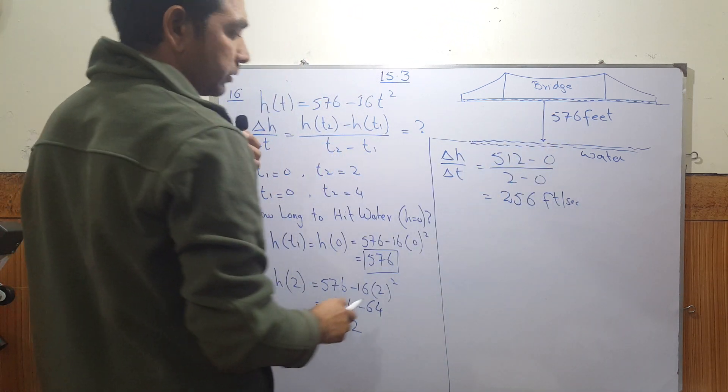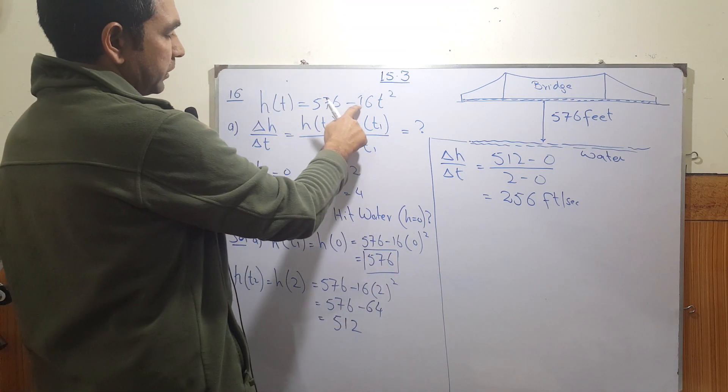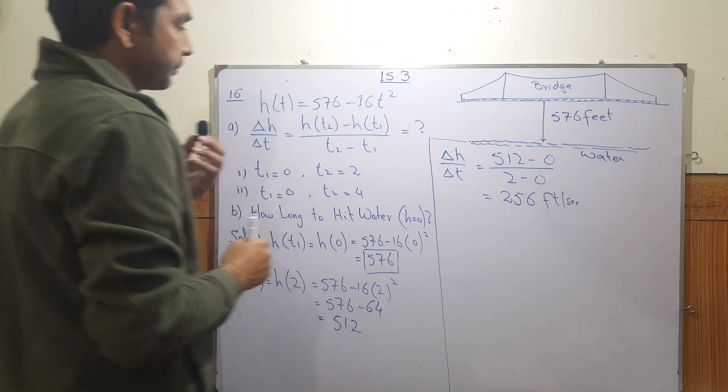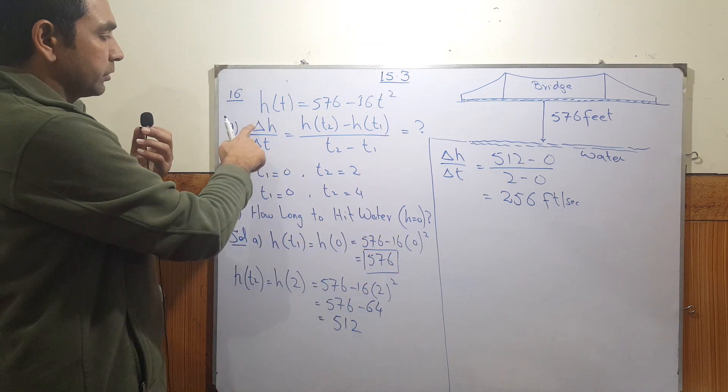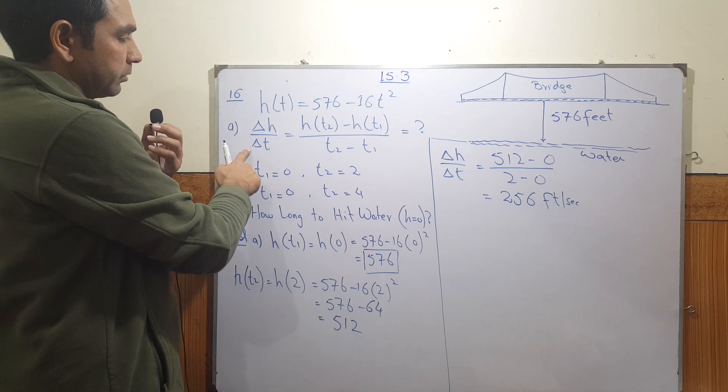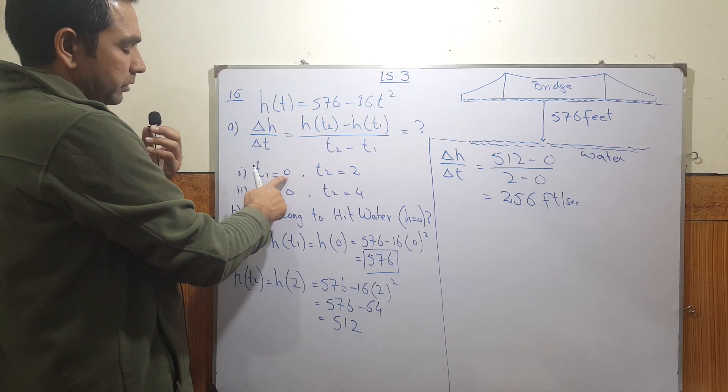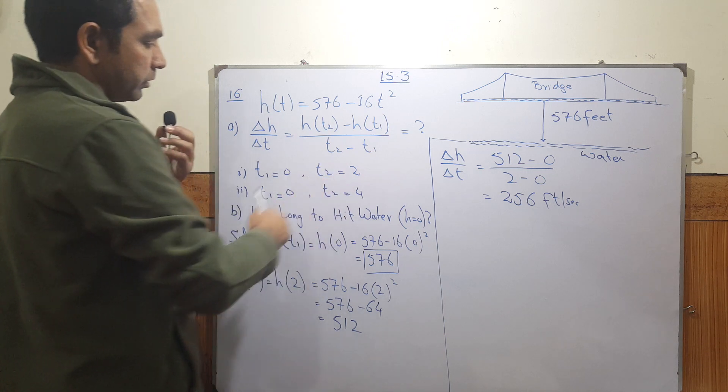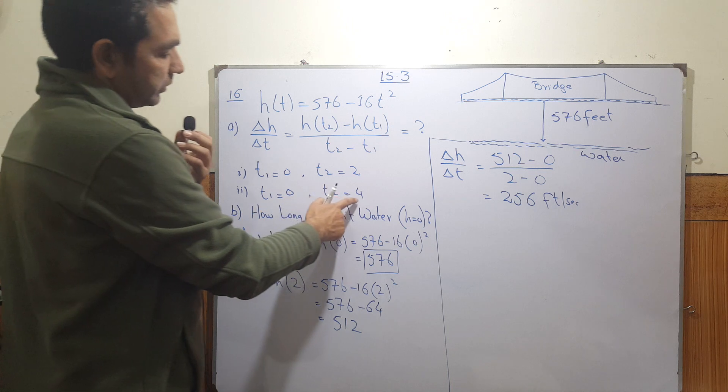The height of the bridge is 576 feet, and the function of the height is given by h(t) = 576 minus 16t squared. They're asking you to find the average rate of the height with respect to time when T equals zero to T equals two, and the second part is T equals zero to T equals four.